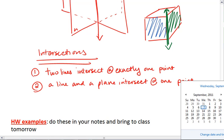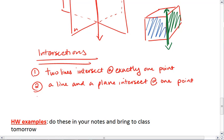And for that one, imagine having a piece of paper and shoving your pencil through it. That would be the intersection of a line and a plane. And then lastly, two planes intersect at one line.